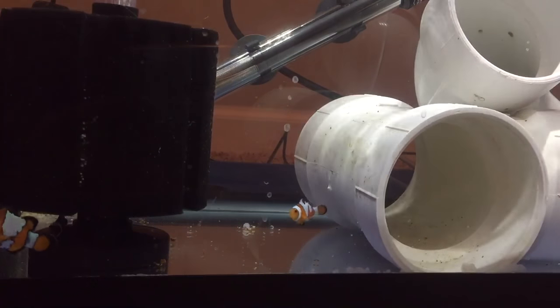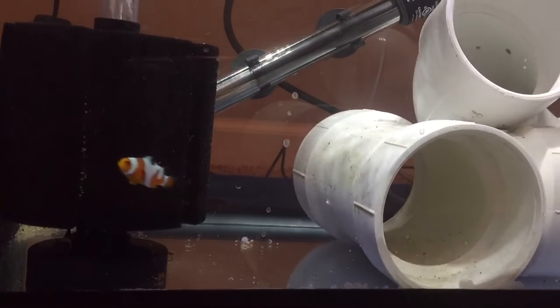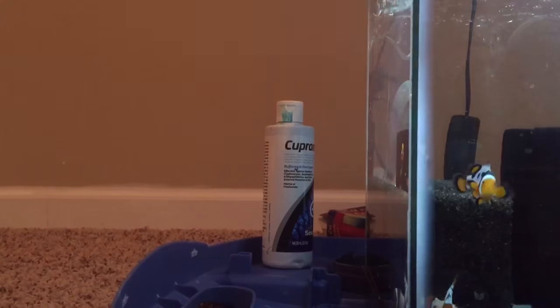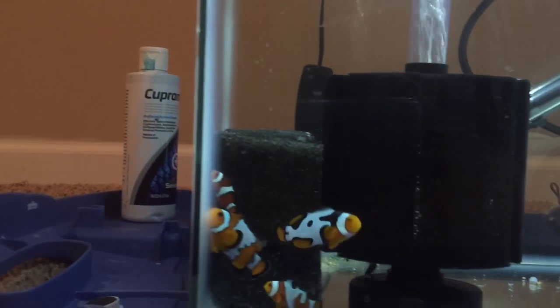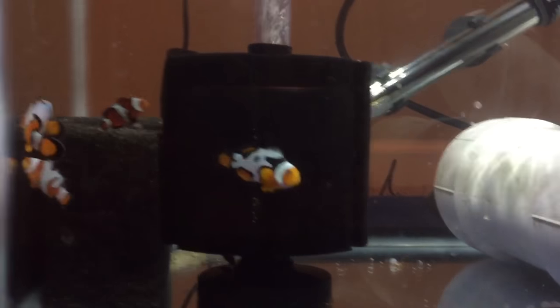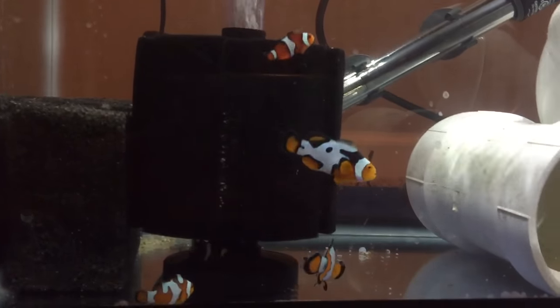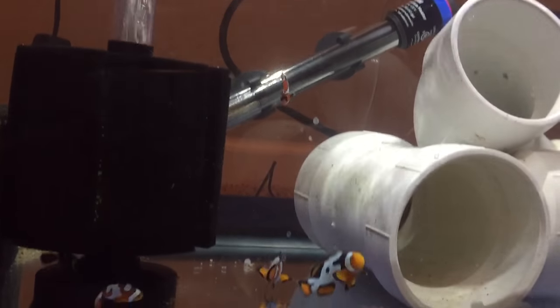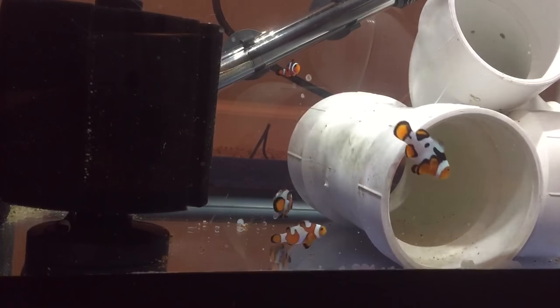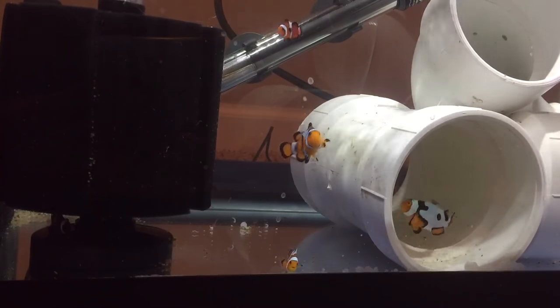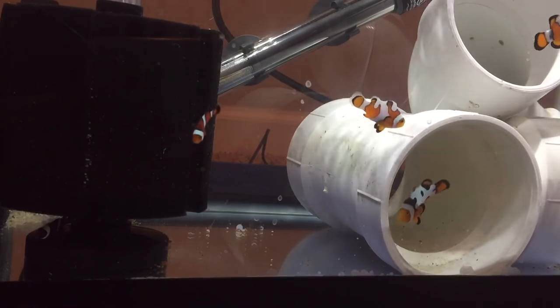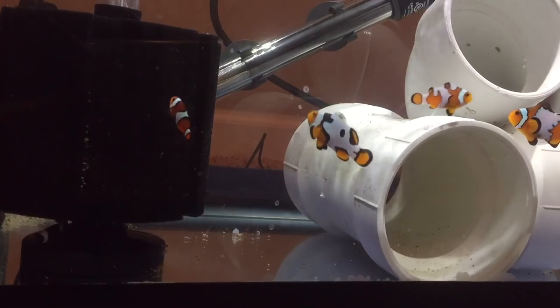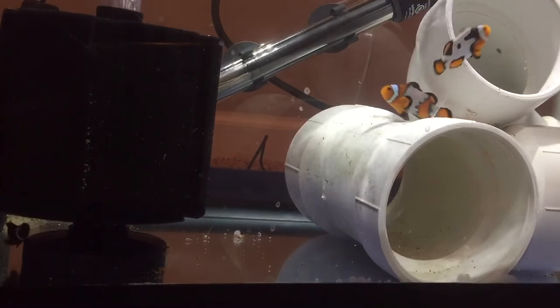How did she get ich? Well, in my JBJ 45 I bought an anemone and I did not quarantine the anemone. You cannot use that copper solution Cupramine by Seachem if there are inverts like shrimp or snails present, it will kill them instantly. Starfish it will also kill, coral instantly.